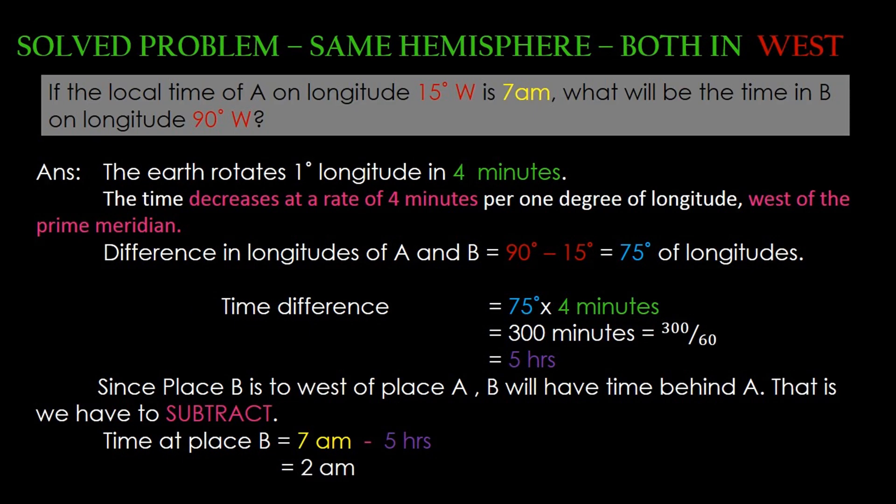If the local time of A on longitude 15 degrees west is 7 am, what will be the time in B on longitude 90 degrees west? The first step is to find out the difference in longitudes of A and B. Here both the longitudes are in the western hemisphere, so the difference in longitude is 90 degrees west minus 15 degrees west, that is 75 degrees of longitude.